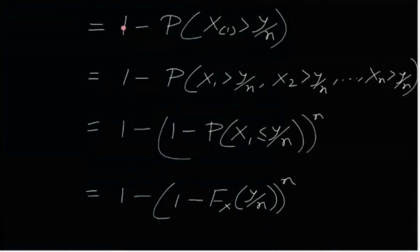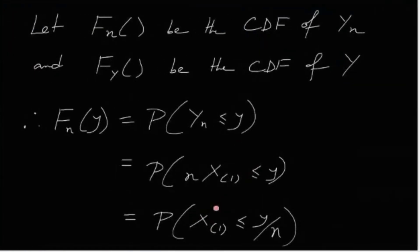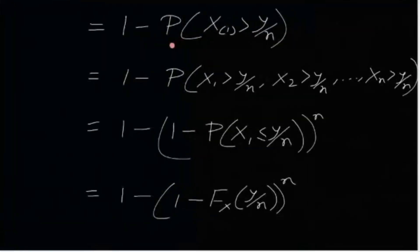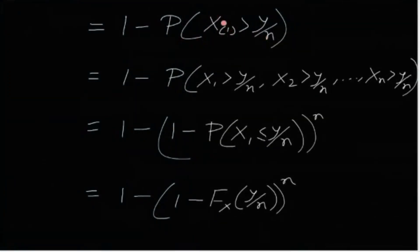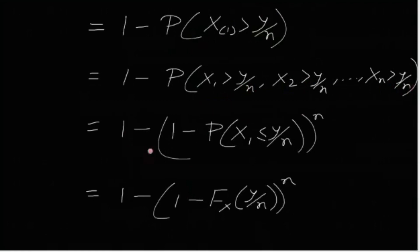This equals 1 minus P(X(1) > y/n). Since X(1) is the minimum of X1 through Xn, if the minimum is greater than y/n, then each of X1, X2, up to Xn is greater than y/n. Since they are IID, this becomes 1 minus [P(X1 > y/n)]^n, which equals 1 minus [1 minus F_X(y/n)]^n.